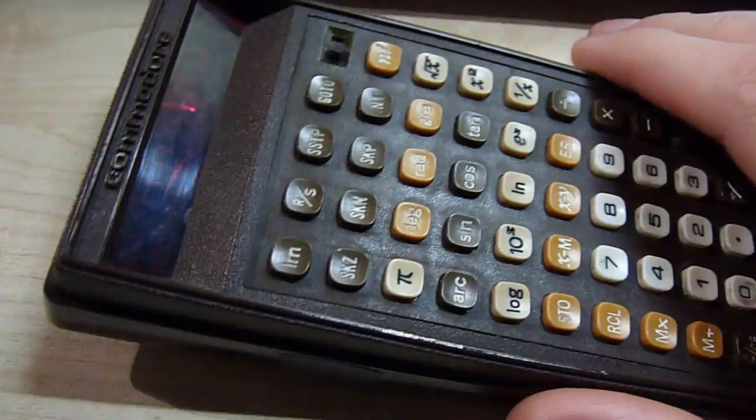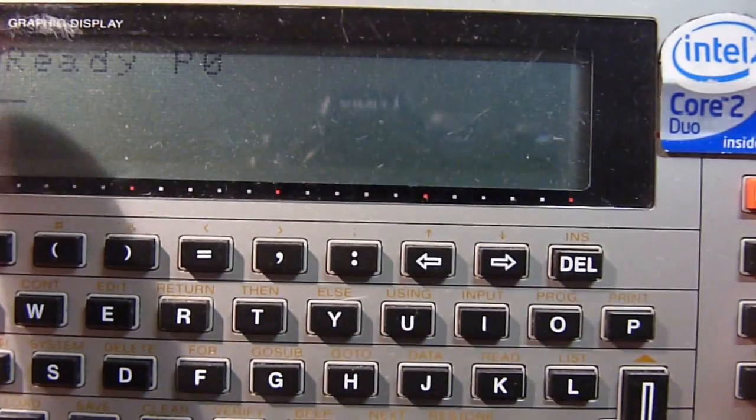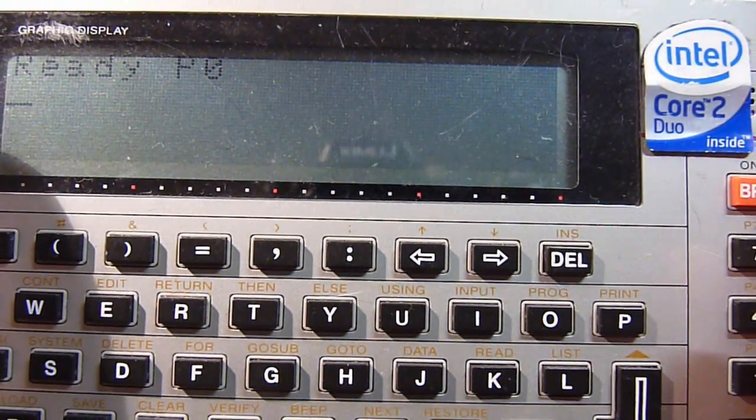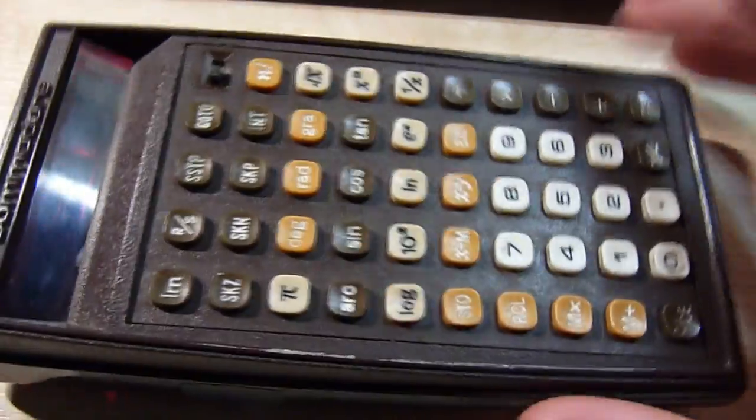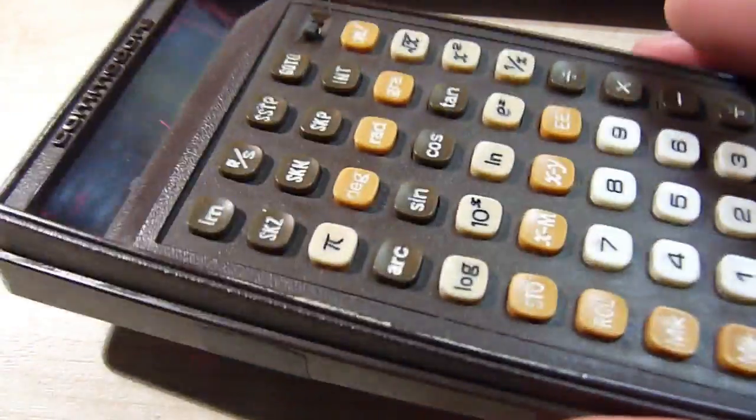A few years later, technological developments lead to something like this. The beautiful Casio PB700. Far more capable. Has a fully fledged programming language of basics. So essentially, you can use it as a computer of that era. Although limited by its specs due to its size.